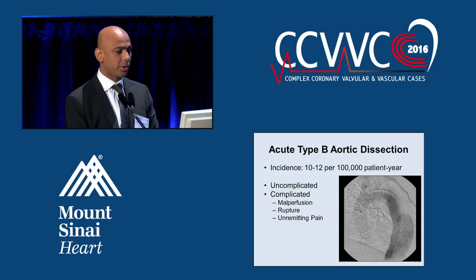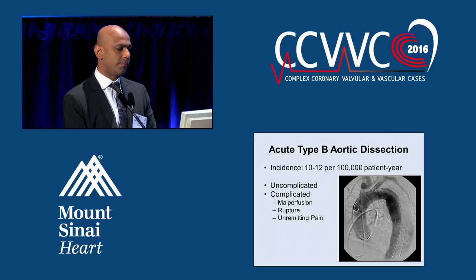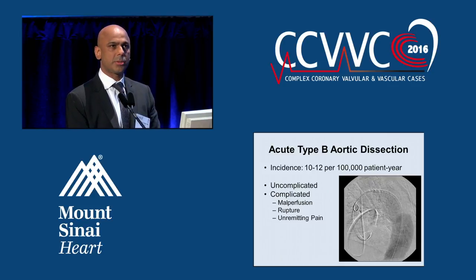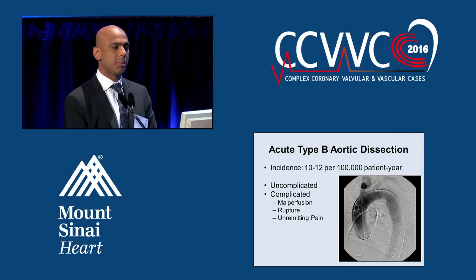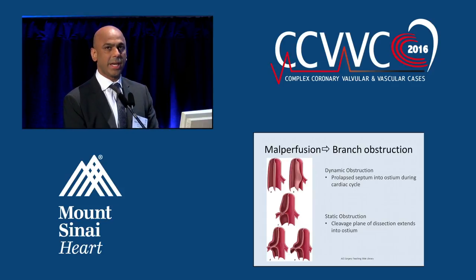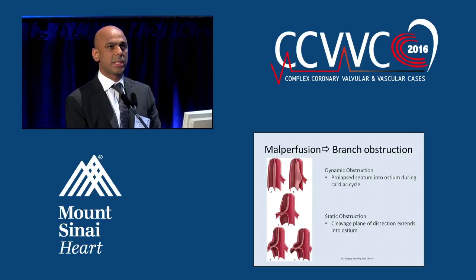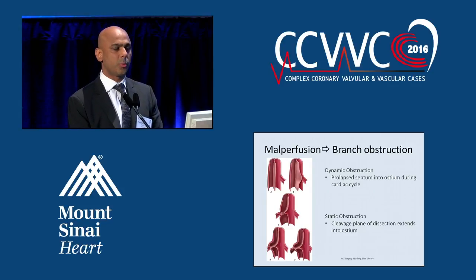Dissections can be uncomplicated or complicated. Complicated ones usually have some form of end organ malperfusion — this could be intestinal ischemia, renal failure, or ischemia of the lower extremities, and those must be treated emergently. End organ ischemia occurs because of either a dynamic or static obstruction. As the false lumen or intima moves back and forth, it can create obstruction at the ostium of one of the vessels, leading to waxing and waning symptoms or a more static fixed problem.